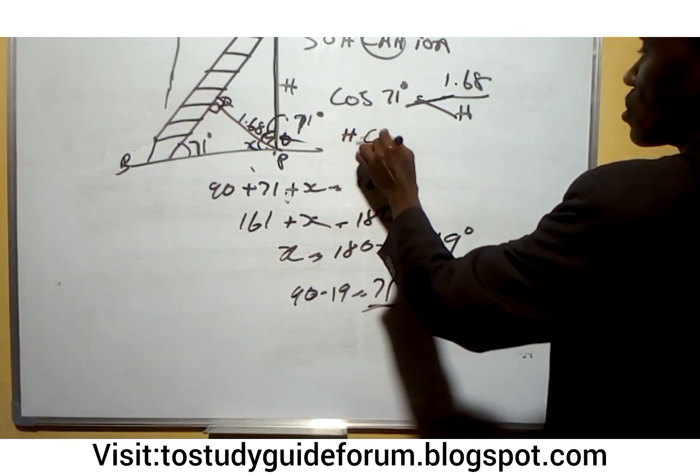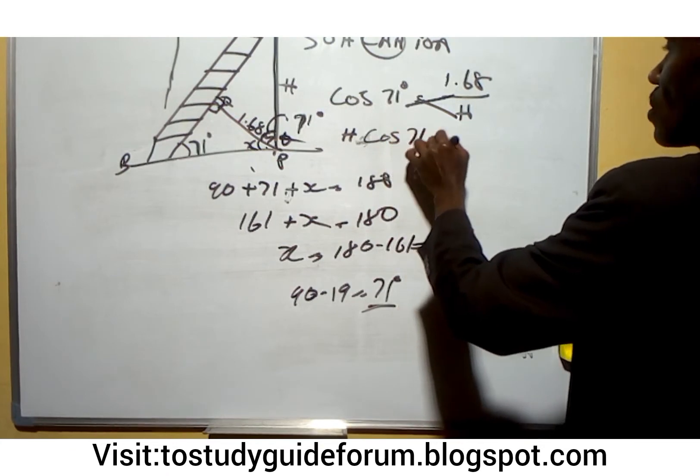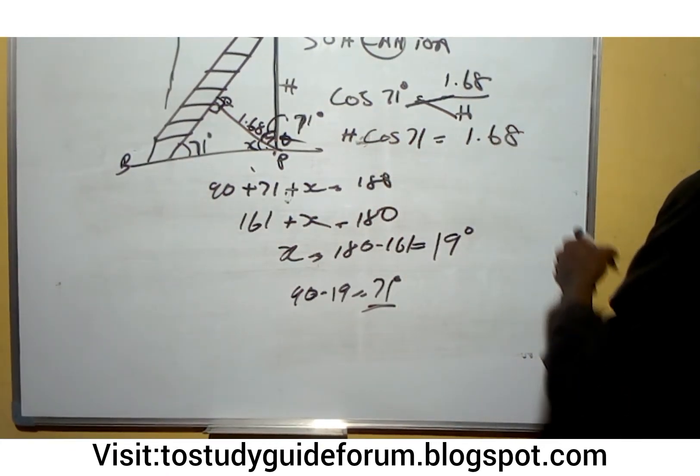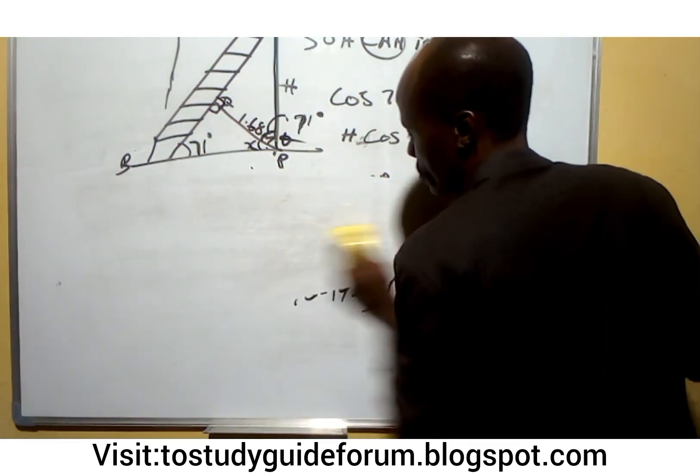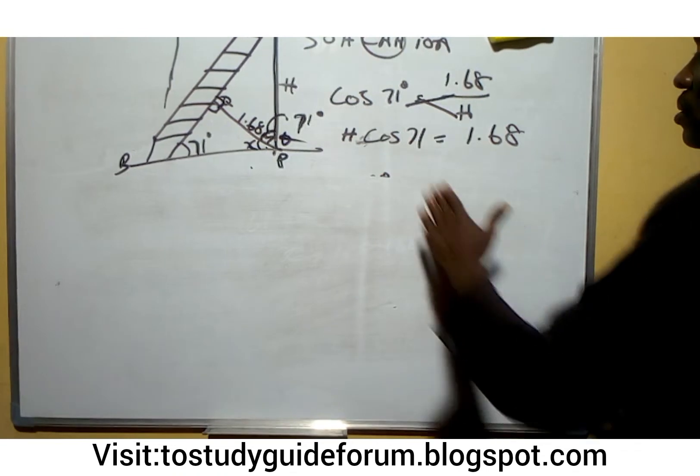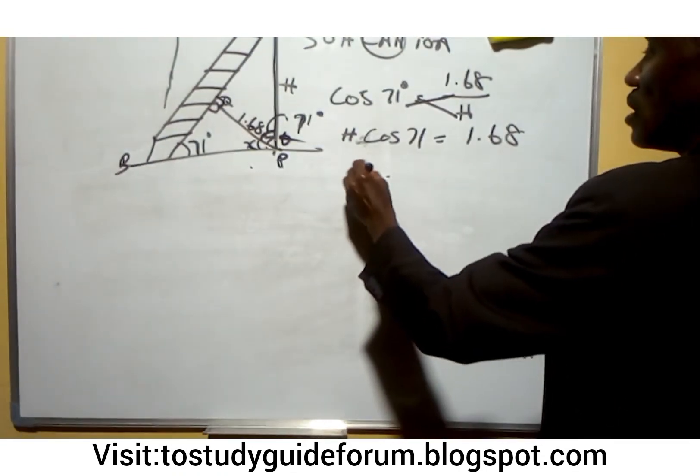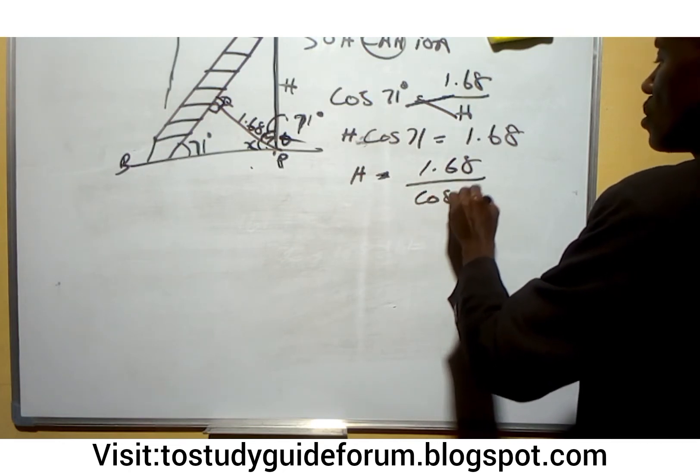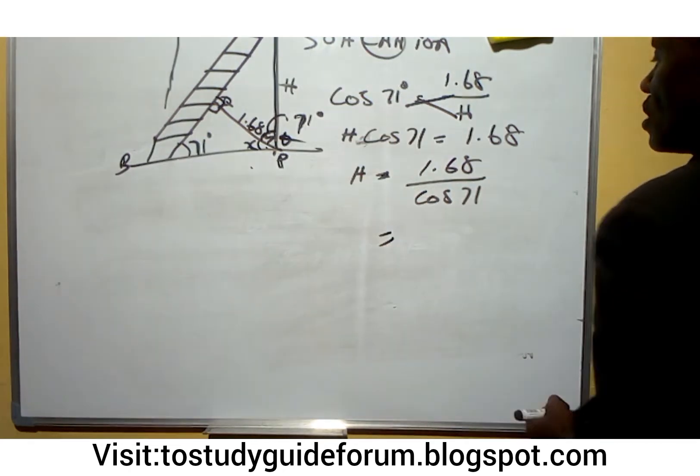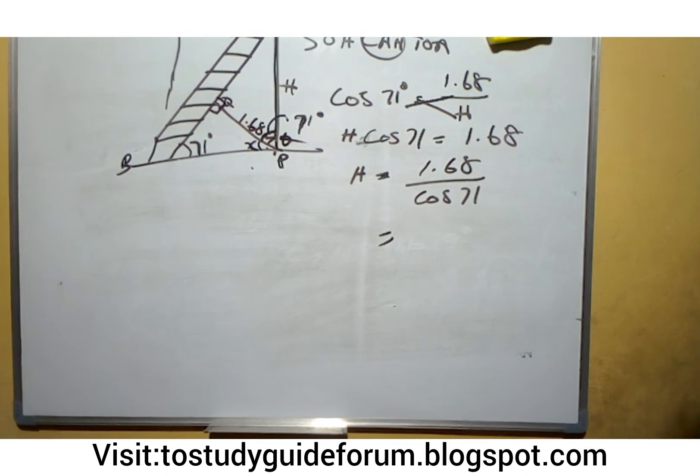If we cross multiply, we have H cosine 71 equals to 1.68. So H will then be 1.68 over cosine 71.